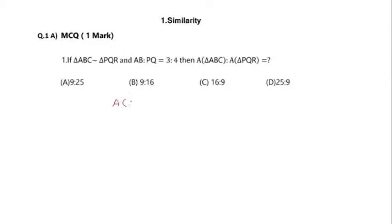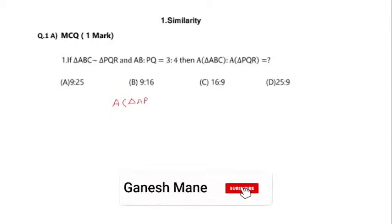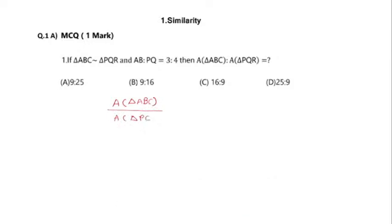We need to find the ratio of area of triangle ABC divided by area of triangle PQR. Since the two triangles are similar, we use the property that the ratio of areas of two similar triangles is equal to the ratio of squares of their corresponding sides. Since AB to PQ is given, we take AB square divided by PQ square.